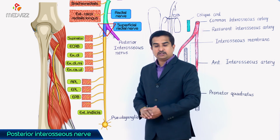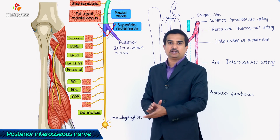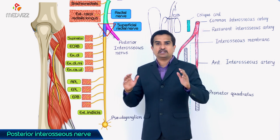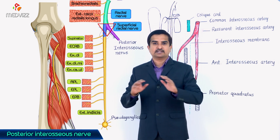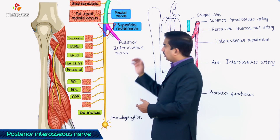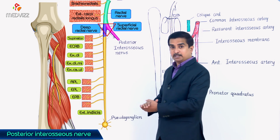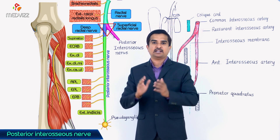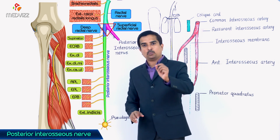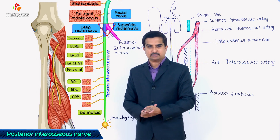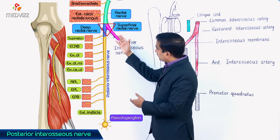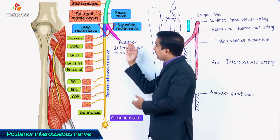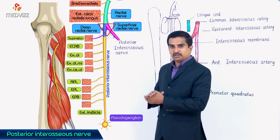One branch is the superficial branch of the radial nerve, which is absolutely cutaneous in nature — it does not give innervation to any of the muscles of the posterior compartment of the forearm. The other branch is the deep branch, which continues as the posterior interosseous nerve after innervating and piercing the supinator muscle. Once the deep branch is formed in the cubital fossa, it gives off a small branch to the supinator.